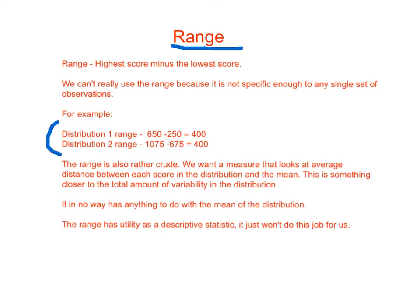So take a look at this example right here. For distribution or score set one, the range might be from 650 to 250, and that gives us a range of 400. For the second distribution or set of scores, we might have a range of 1075 to 675. Again, that's a range of 400. So range is not going to be particular to any given set of scores. In other words, different sets of scores might have exactly the same range.